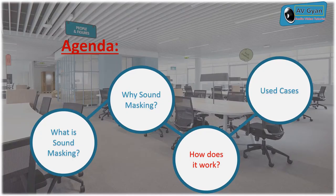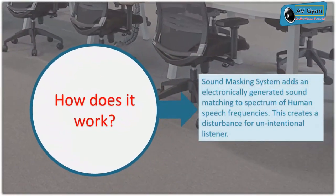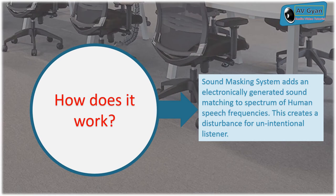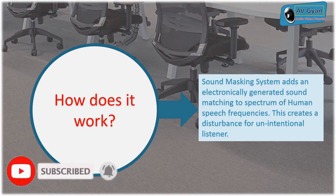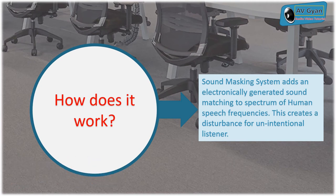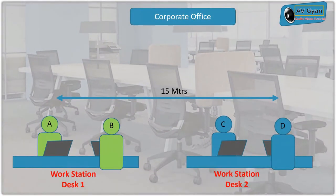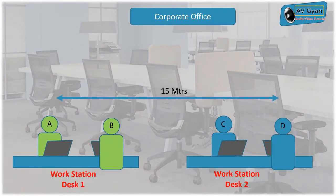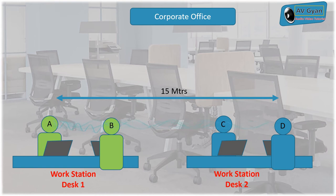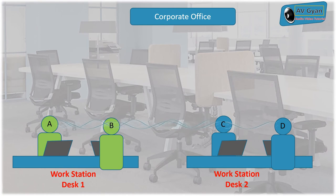How does it work? The sound masking system adds an electronically generated sound matching the spectrum of human speech frequencies. This creates a disturbance for an unintentional listener — in our example, persons C and D. Usually, when a person speaks in an open office scenario, their voice can reach up to 15 meters easily. In other words, a talking person can create disturbance or discomfort up to 15 meters from where they are present.